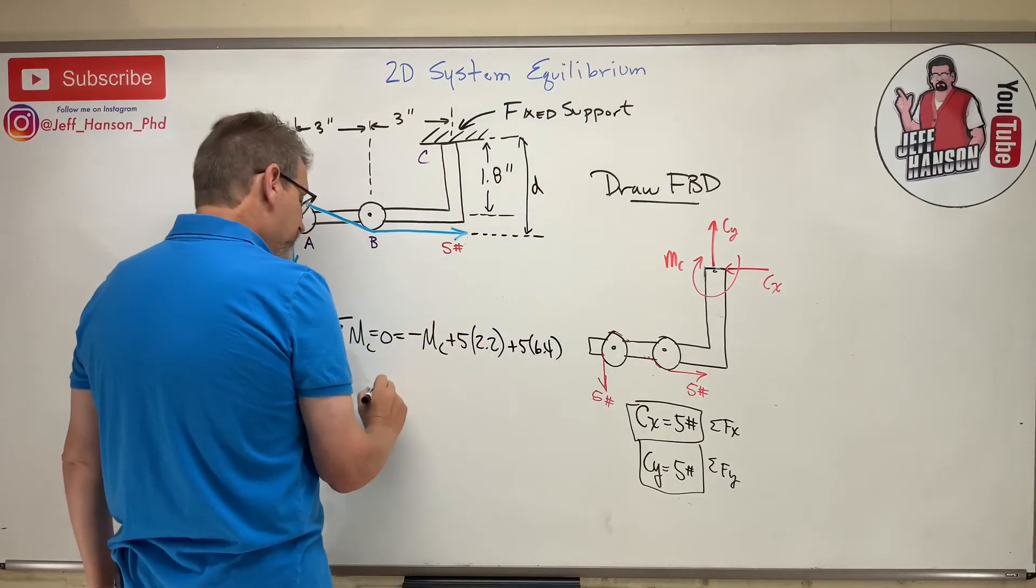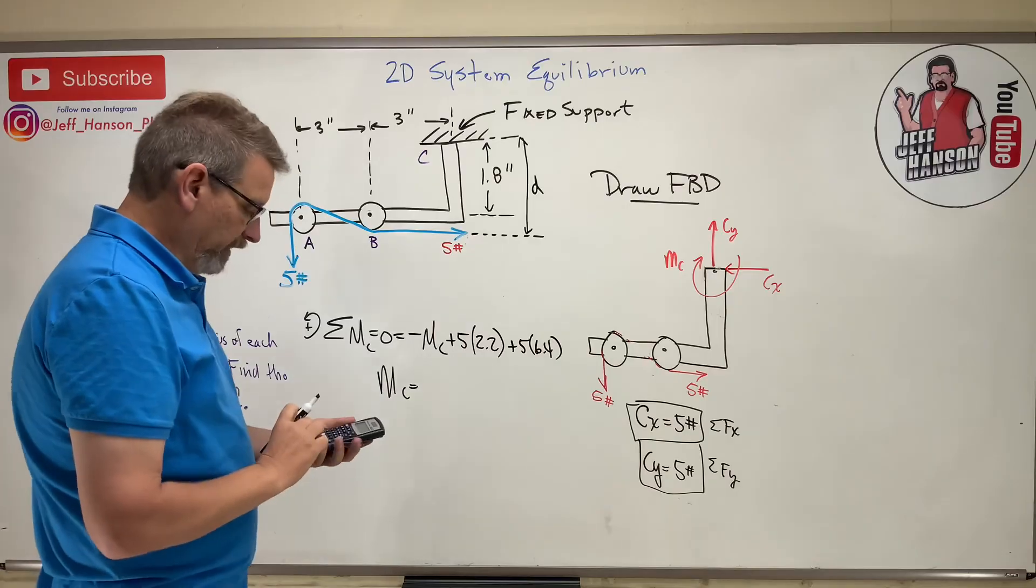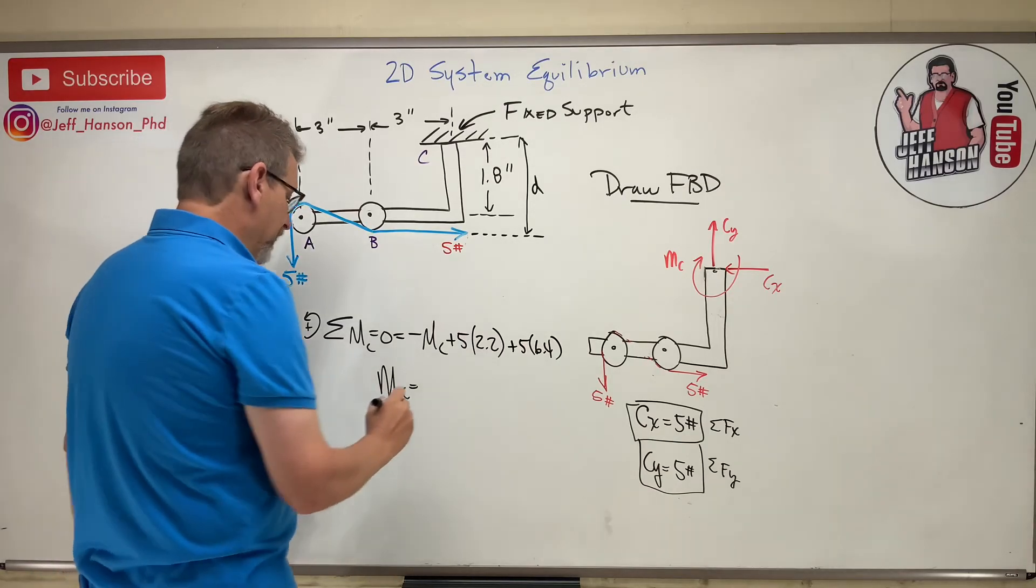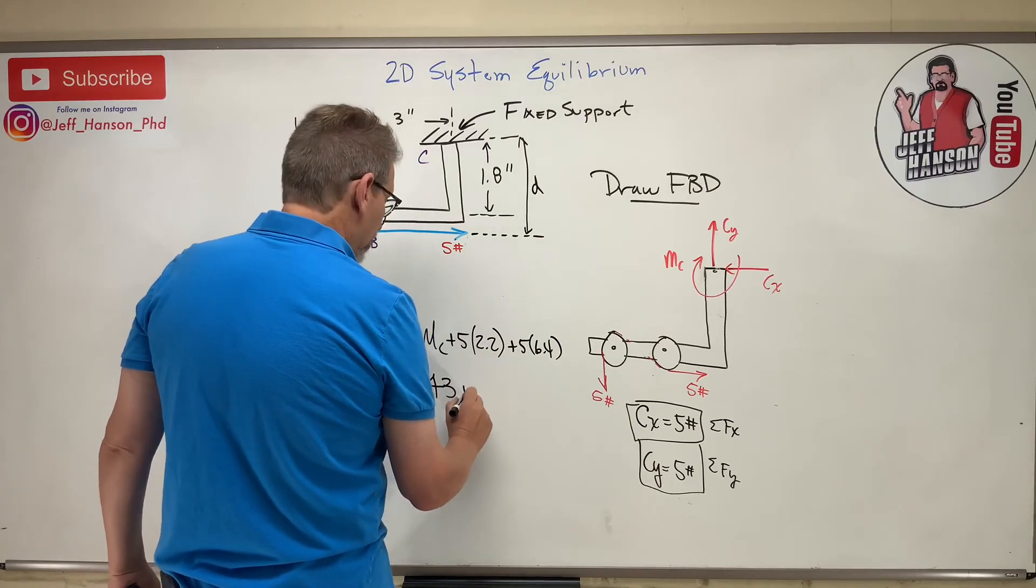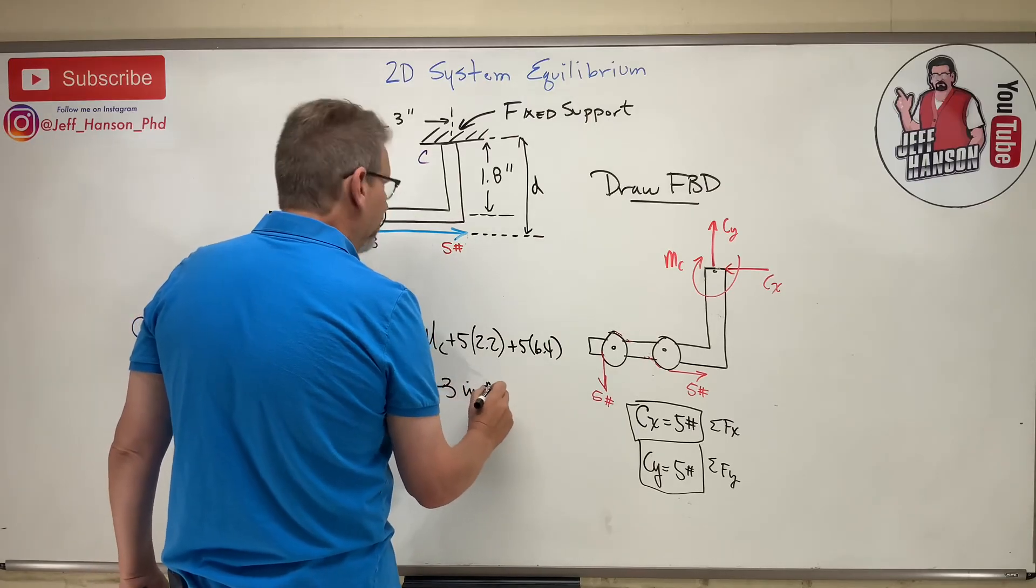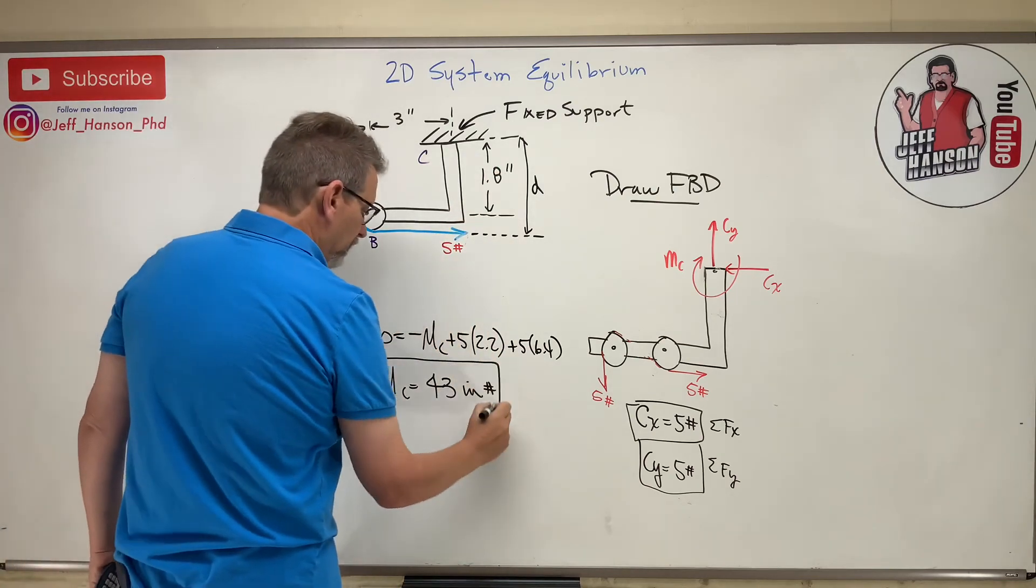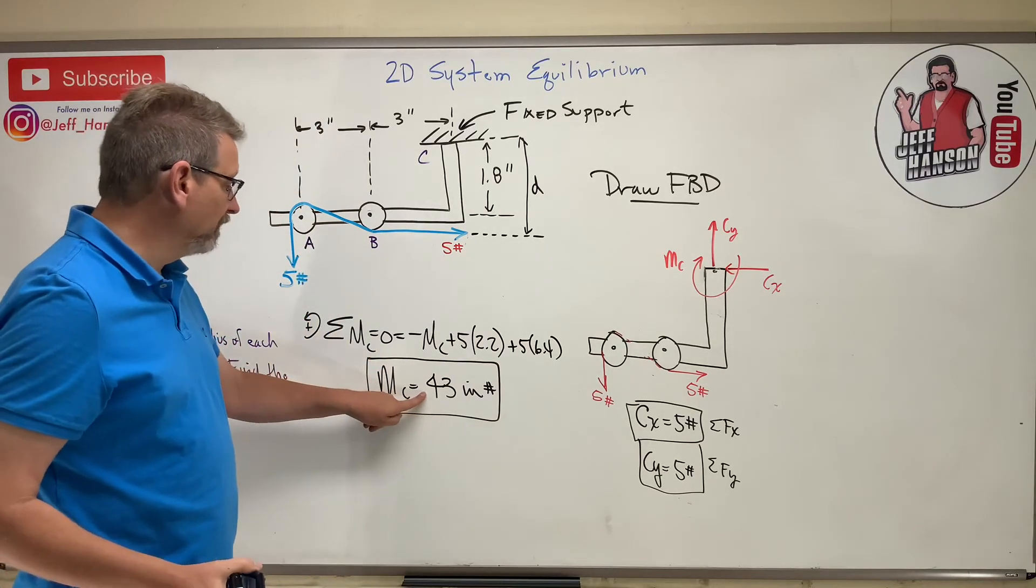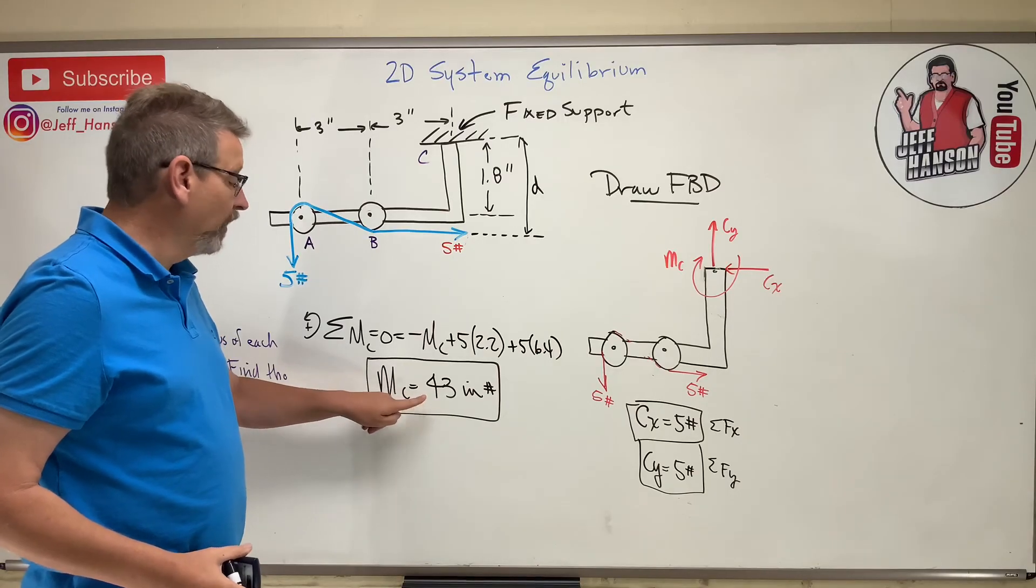So move the Mc to the other side. Mc is equal to - calculator on - 43, and that is inch-pounds, because this is in inches and the forces are in pounds.